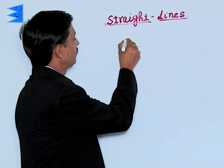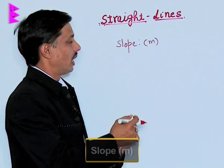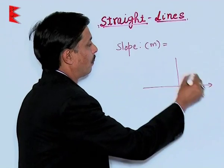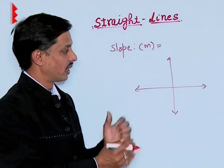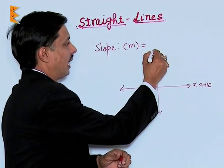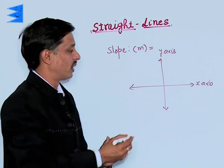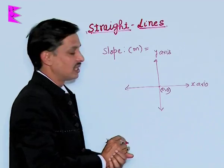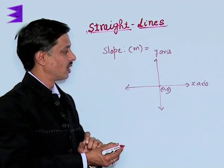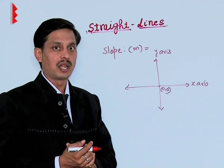The slope of a straight line is symbolically given by M. To explain what slope is, consider a plane having four quadrants with a horizontal line called the X-axis and a vertical line called the Y-axis. The point of intersection of the X-axis and Y-axis is known as the origin, where the values of both X and Y are 0. The first mandatory thing to start the topic of straight lines is to understand what slope is.